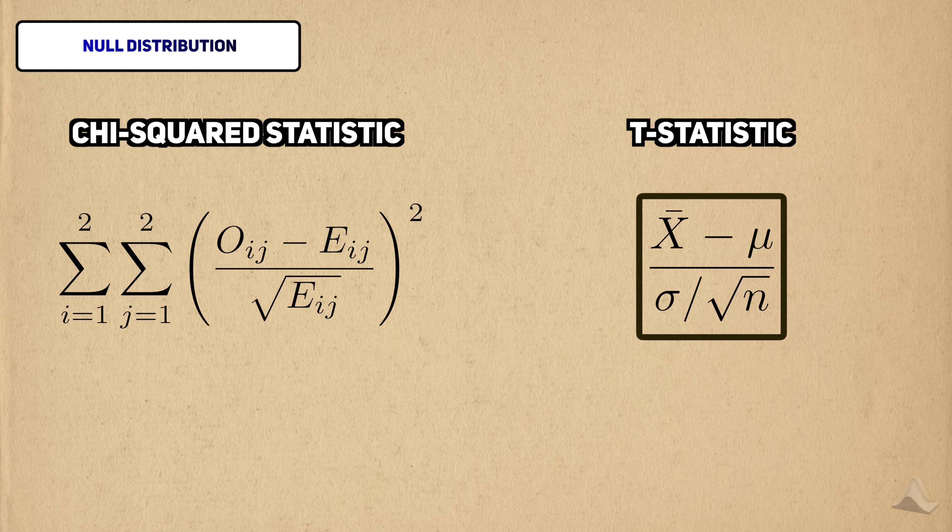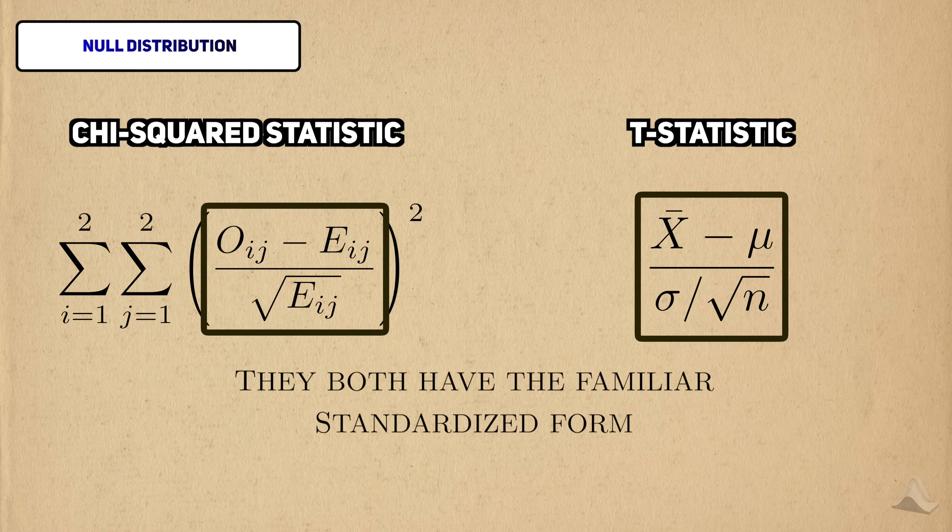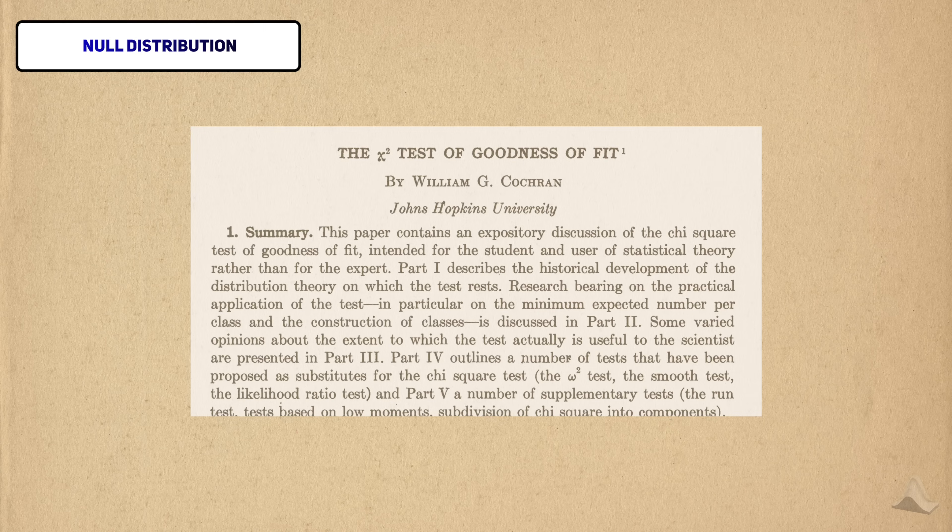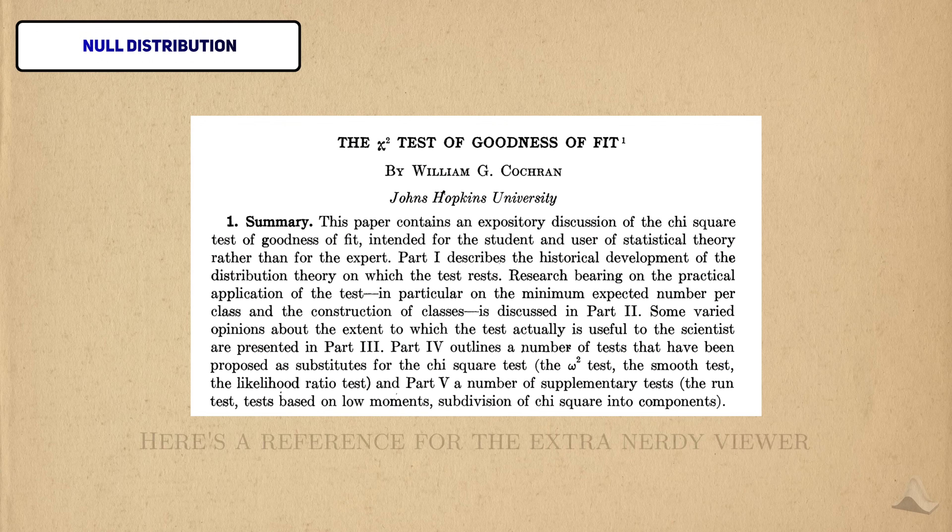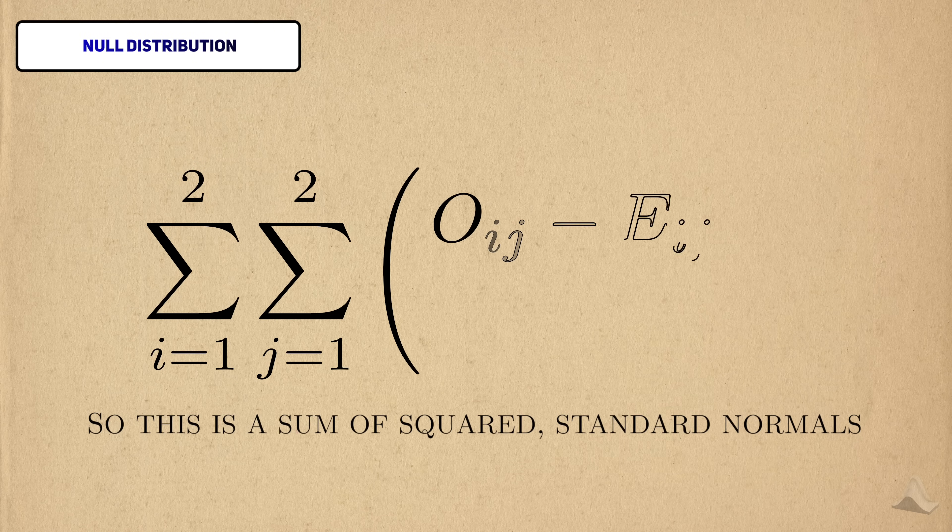If you compare the t statistic to the chi-squared statistic, you'll see that it has a similar standardized form. You can also think of this statistic as a standard normal. I won't go over the technical details here, but here's a good paper for an interested viewer to look at. So the statistic is a sum of squared standard normals.